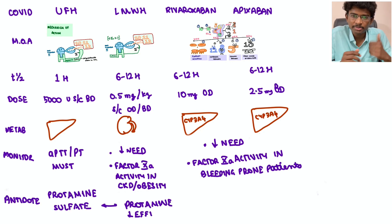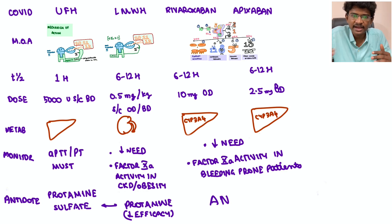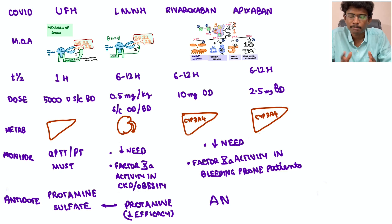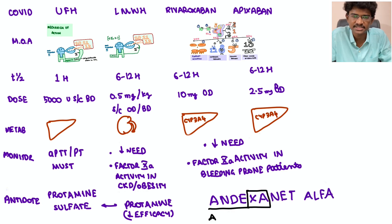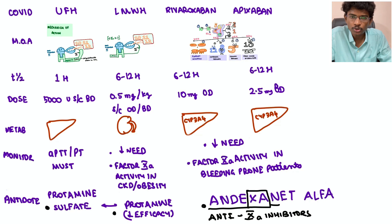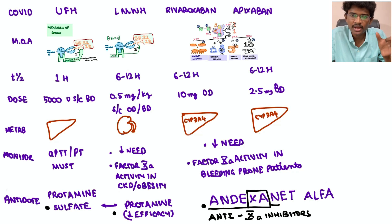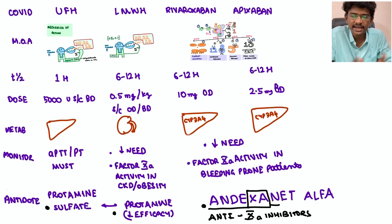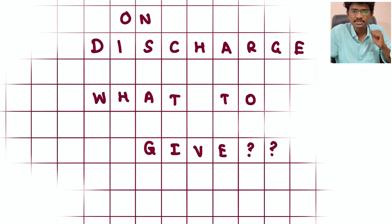Antidotes: for heparin, protamine sulfate works by chemical antagonism — protamine sulfate is positively charged and heparin is negatively charged; they bind together and antagonize. Protamine has little effect against LMWH (clexane). The antidote for factor Xa inhibitors is andexanet alfa — remember: 'and-ex-a-net' for antidote to Xa inhibitors. This is an important exam question.